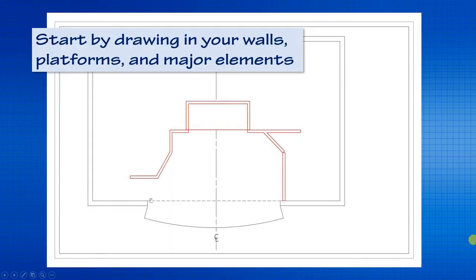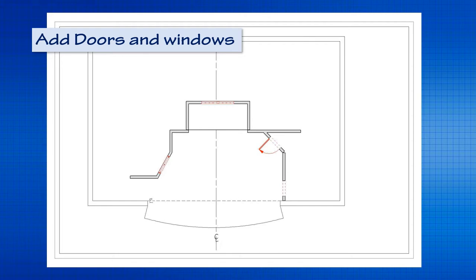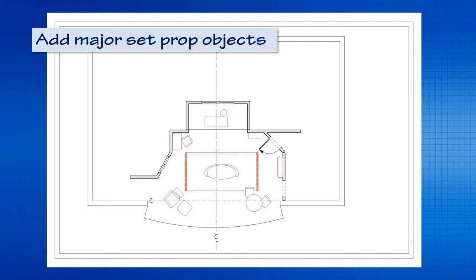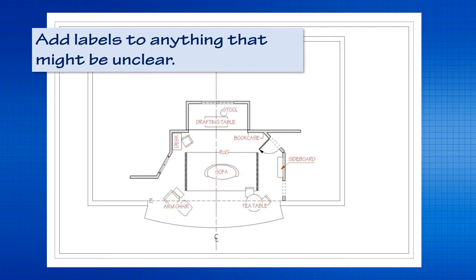Let's look at the steps you might do when starting your own ground plan. You might start by adding platforms, walls, and major elements — if it's a presentational design, whatever element is really defining the space. If it's a realistic interior, add your doors and windows where they need to be, thinking about entrances and exits. Then add major set prop objects — furniture. You don't need every hand prop, but things like telephones can be important for blocking. A very important step is to add labels to anything that might be unclear — that sofa could be guessed, but the word 'sofa' confirms it.